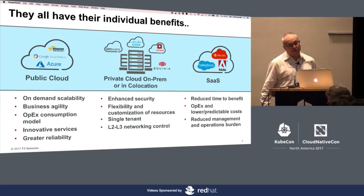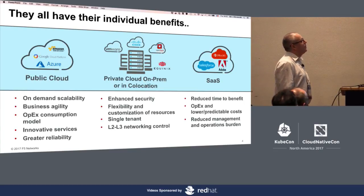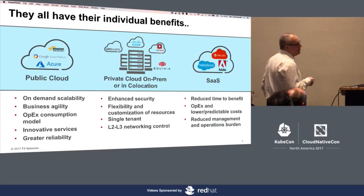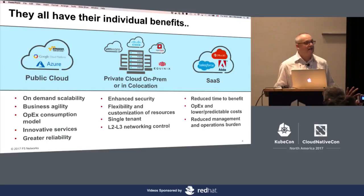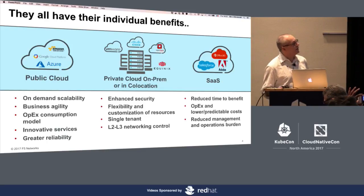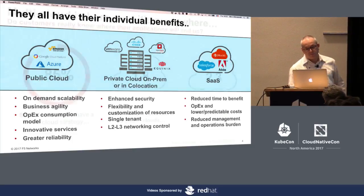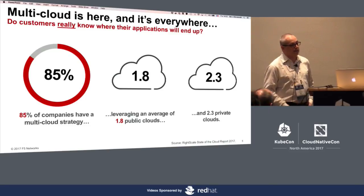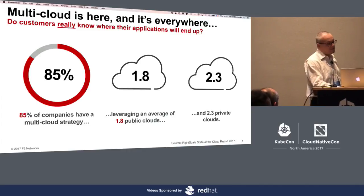There are many different reasons you would choose each kind of environment. For example, with private cloud — on-prem or in colocation — typical reasons would be enhanced security, or a need for layer two and layer three networking controls. And it does seem that a huge percentage, so 85% of companies, have a multiple cloud strategy.